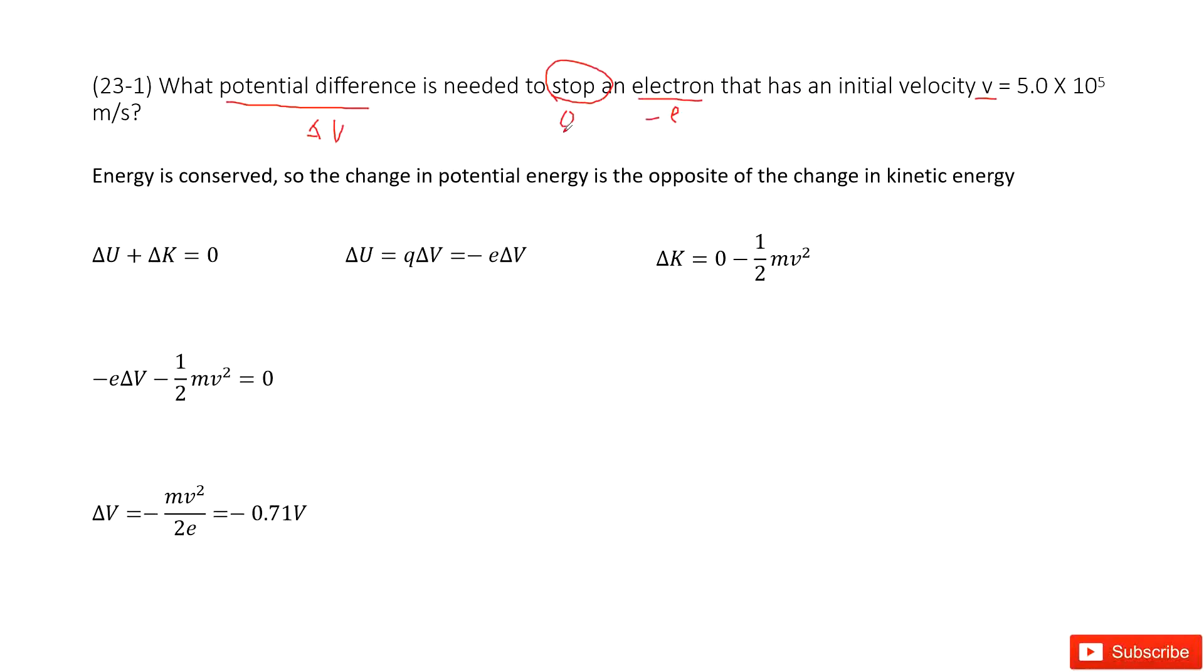So we can see what is the change for potential energy. The change in potential energy is the charge times delta V. As we know, the charge for an electron is negative e.